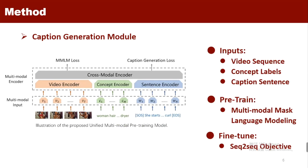The input of our UMPM consists of video sequence, concept labels, and caption sentence. To learn the semantic alignments between video and sentence, we adopt the multimodal masked language modeling for pre-training, that is, randomly mask out 15% word tokens for prediction. When adapted to caption generation, we fine-tune the pre-trained UMPM using sequence-to-sequence objective.